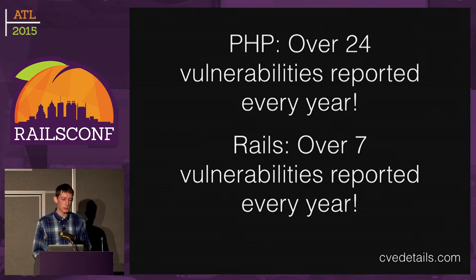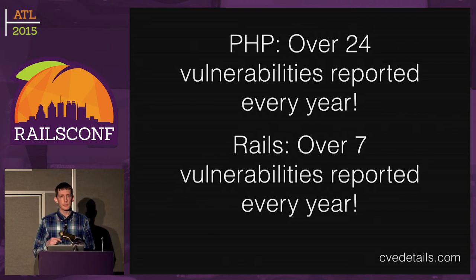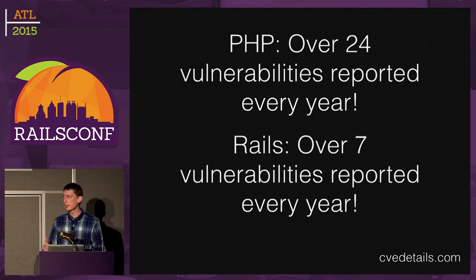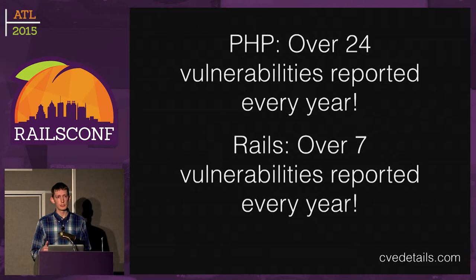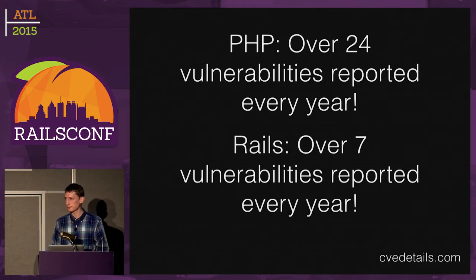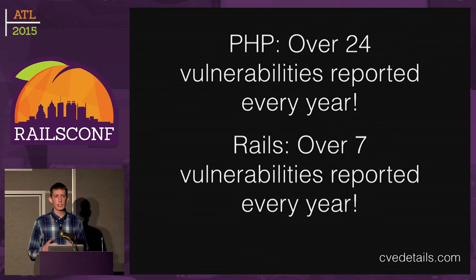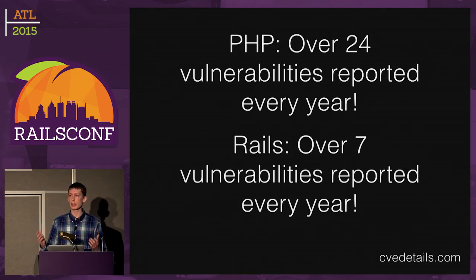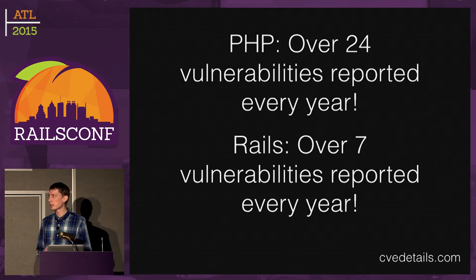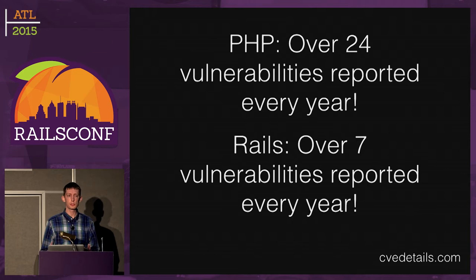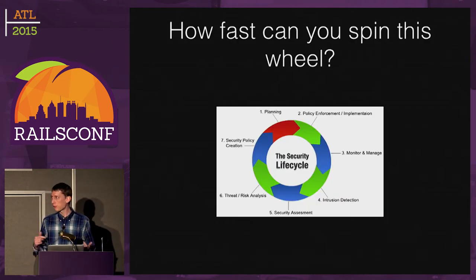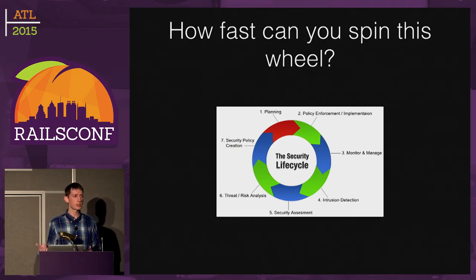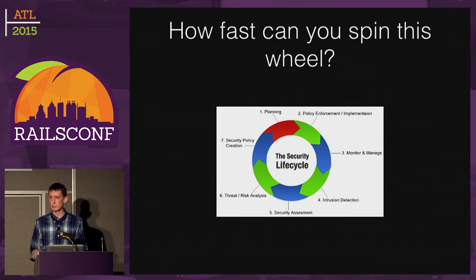The problem isn't just that there are vulnerabilities — it's that every time there's a vulnerability, it takes a lot of time to go through your cycle, to patch it, to update all the source code. In the PHP case, think of WordPress.com with tens of thousands of blogs. They've got a real challenge if once every couple of weeks they have to deploy a new security patch and update all those blogs. So it becomes a question of how fast can you spin this wheel — how fast can you turn over your patches?